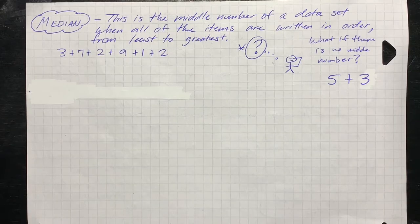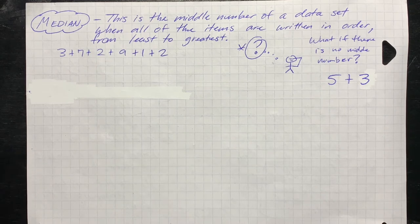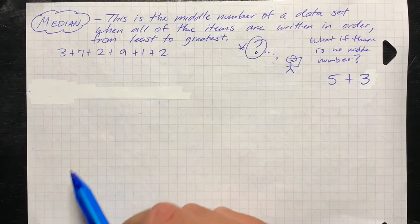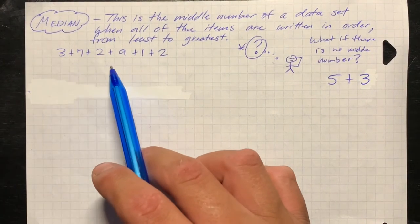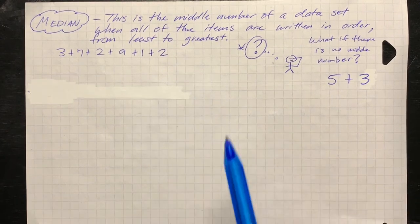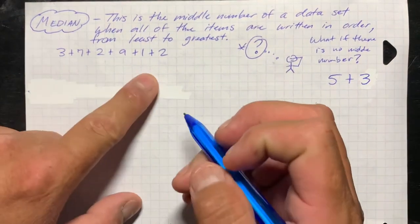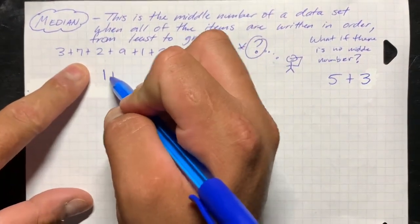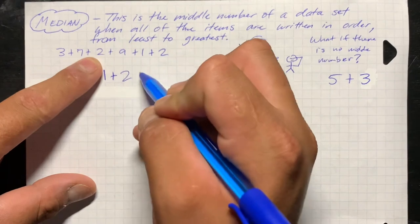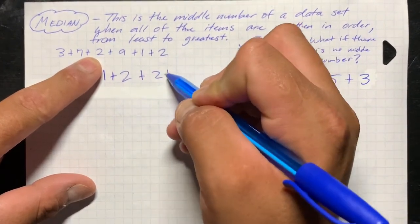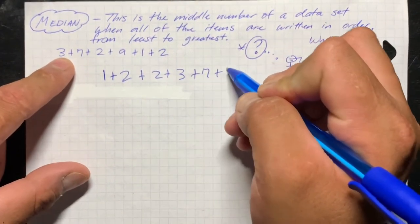The next type of central tendency is called the median. The median is the middle number of a data set when all the items are written in order from least to greatest — from the smallest to the largest. Using that same data set — three, seven, two, nine, one, two — we're going to put these in order from least to greatest: one, two, two, three, seven, nine.